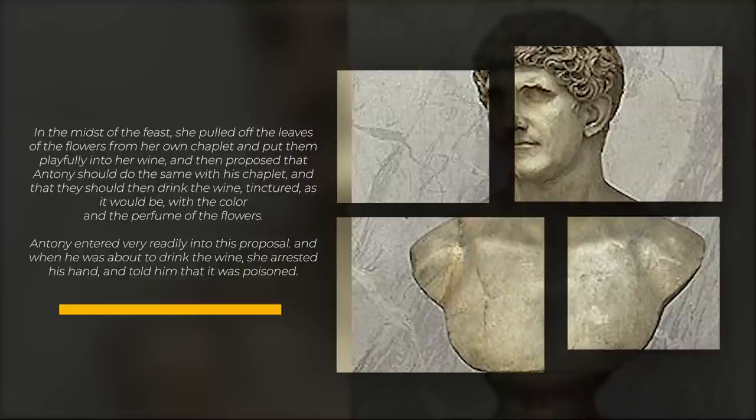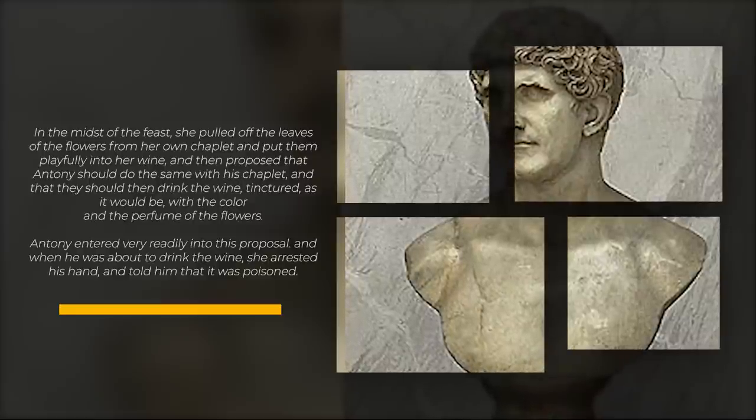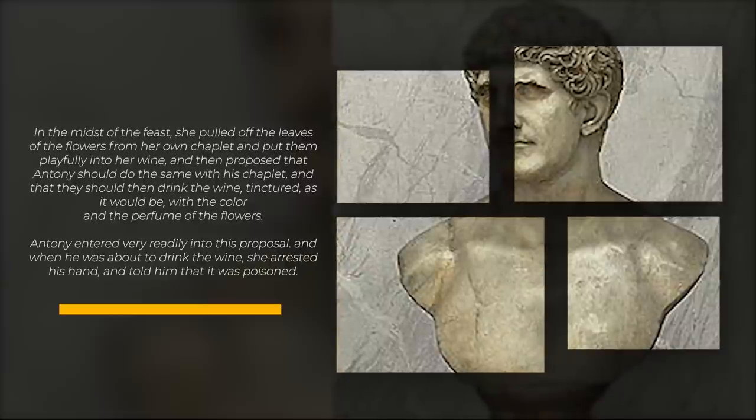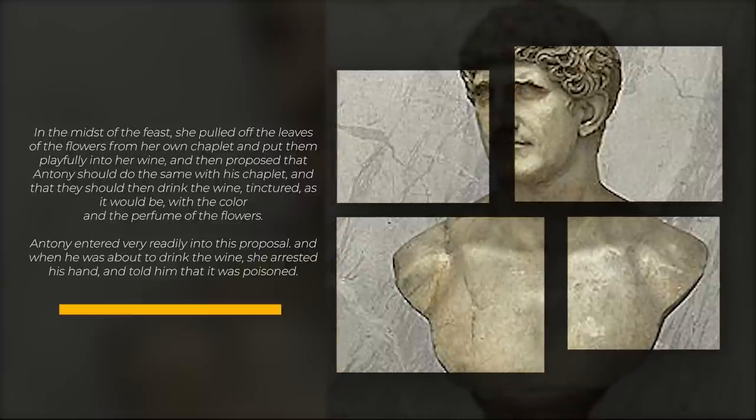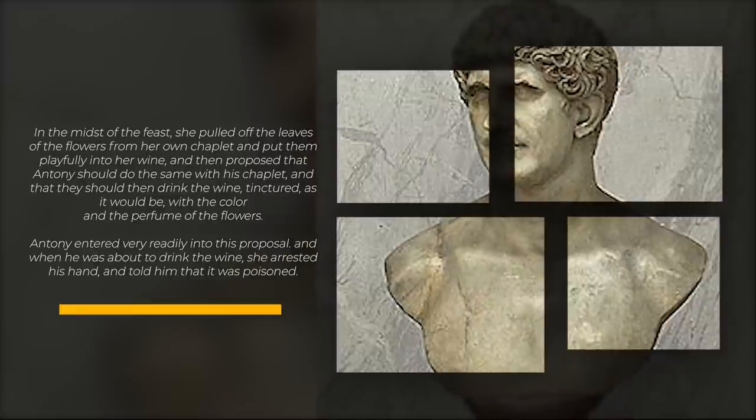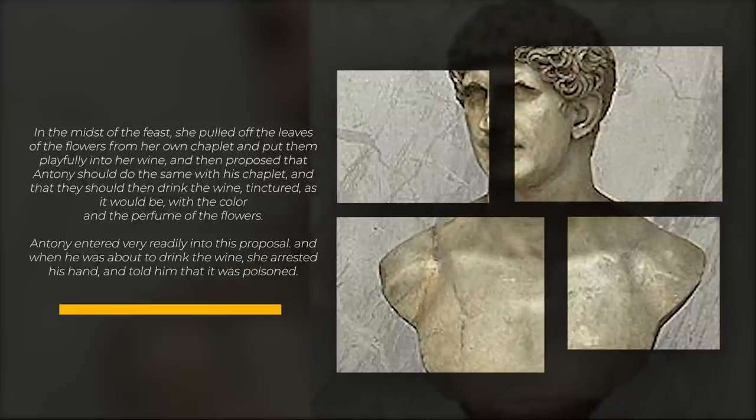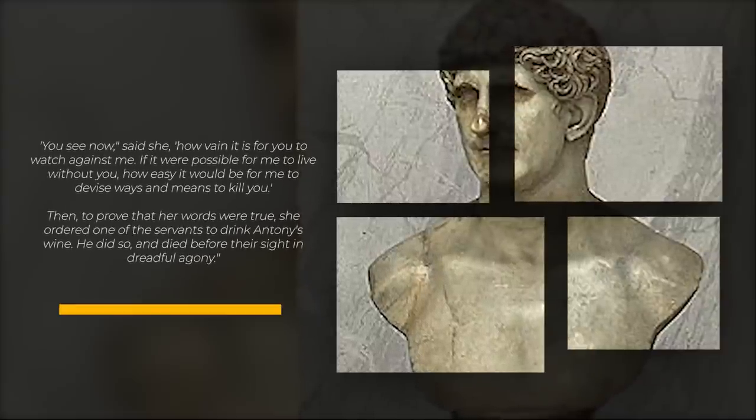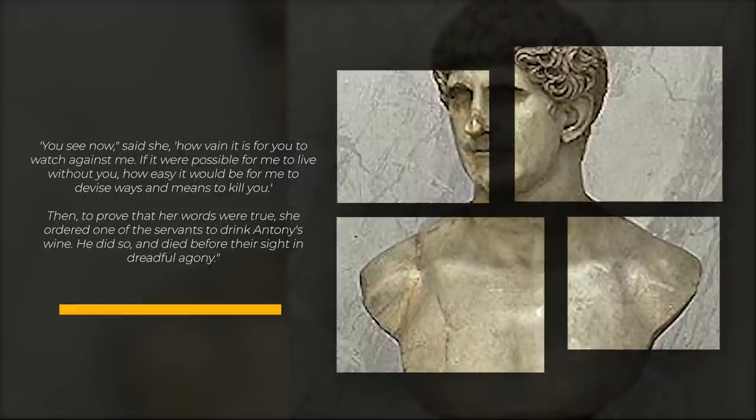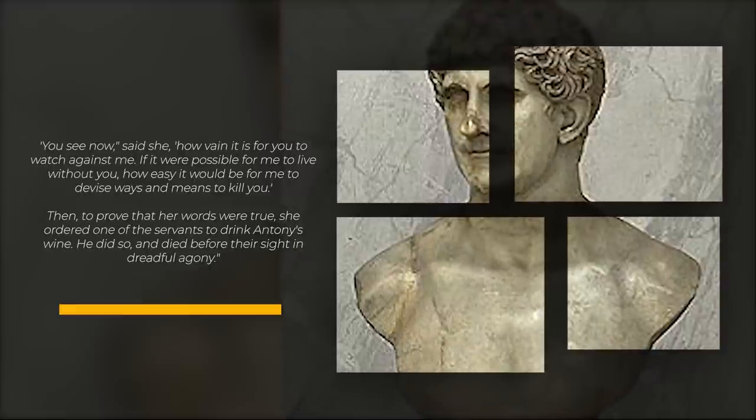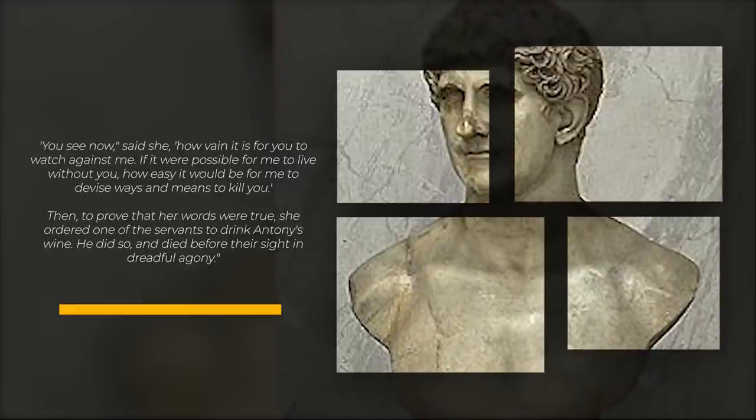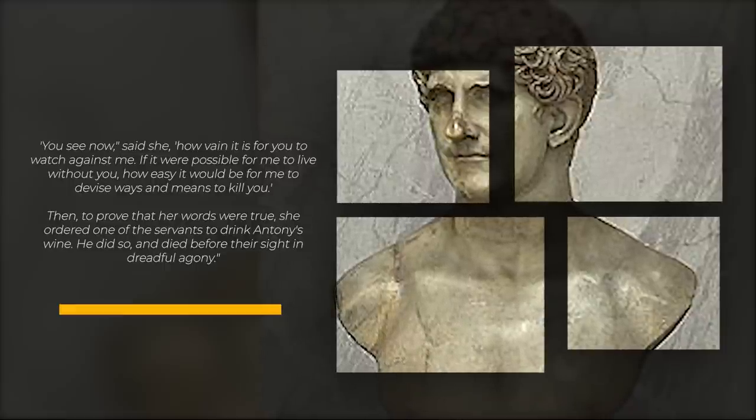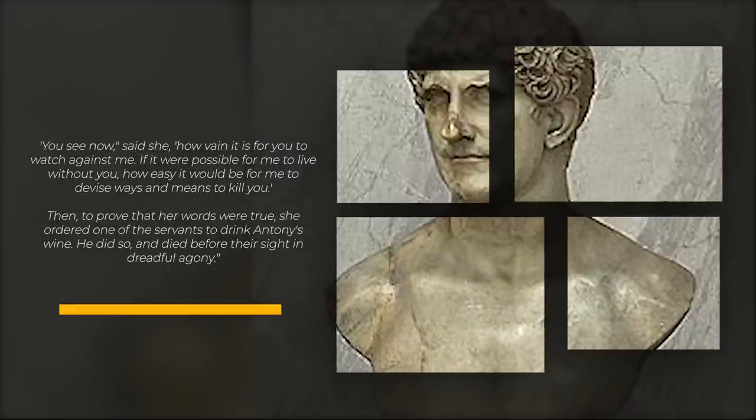In the midst of the feast, she pulled off the leaves of the flowers from her own chaplet and put them playfully into her wine, and then proposed that Anthony should do the same with his chaplet and that they should drink the wine tinctured as it would be with the color and the perfume of the flowers. Anthony entered very readily into this proposal, and when he was about to drink the wine she arrested his hand and told him that it was poisoned. You see now, she said, how vain it is for you to watch against me. If it were possible for me to live without you, how easy it would be for me to devise ways and means to kill you.